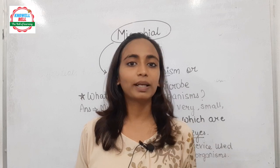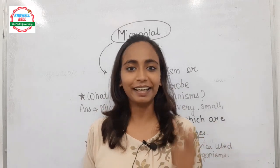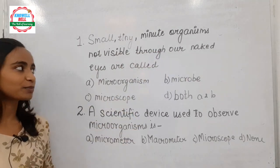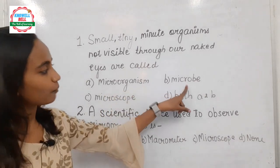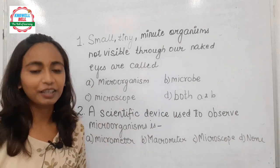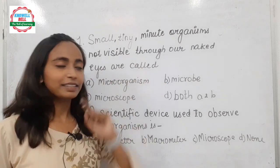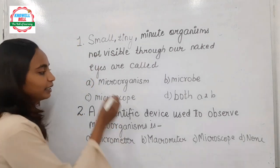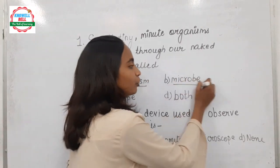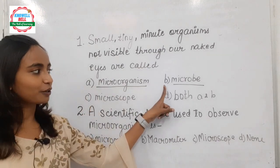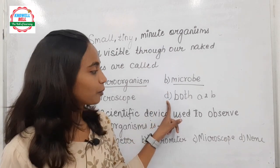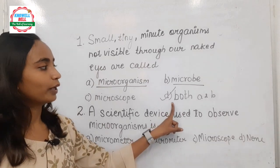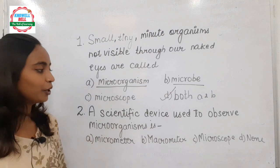So to recap what we discussed: the term microbial is derived from microorganism or microbe. Microorganisms are small, tiny, minute organisms that are not visible through our naked eyes. And microscope is the scientific device used to observe and magnify them. Now let's practice a few questions. Question 1: small, tiny, minute organisms not visible through naked eyes are called — Option A: micro-organisms, Option B: microbe, Option C: microscope, Option D: both A and B. Since we call them either micro-organisms or microbe, the answer is Option D: both A and B.